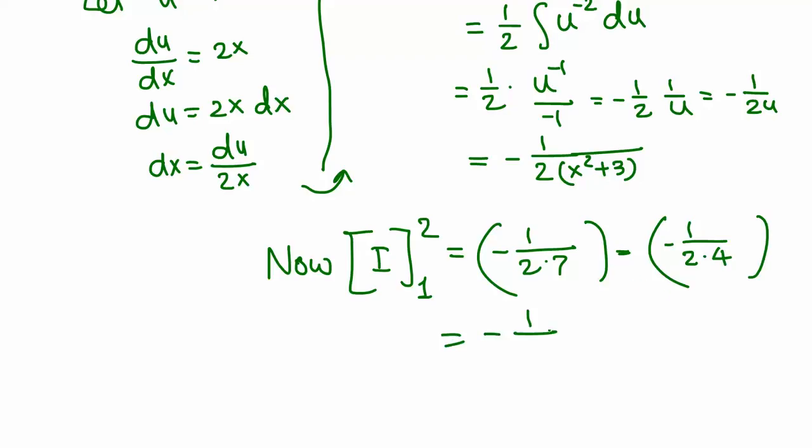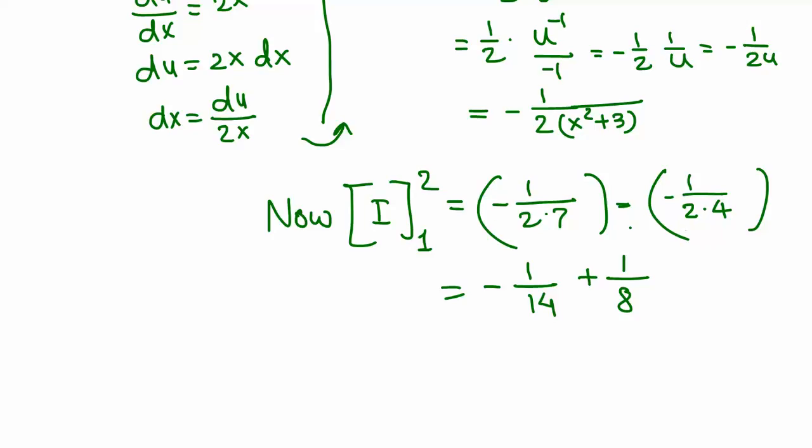This is negative 1 over 2 times 7, which is negative 1 over 14, minus negative 1 over 8, which becomes positive. Now we need to combine these two fractions and work on a common denominator.